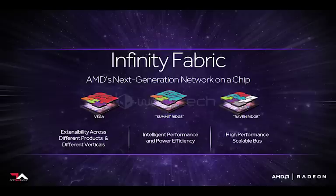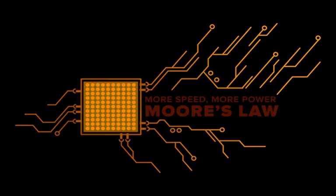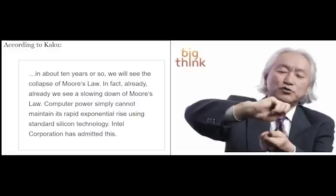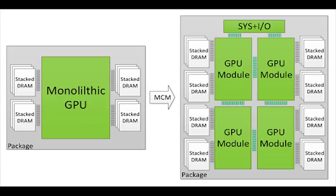Do you guys remember Moore's Law? It states that transistor count will double every 18 months. So far this prediction has held true, but we're getting to a point where shrinking the die size while also packing twice as many transistors is getting difficult, and at some point all chip makers will hit a wall. Physicist Michio Kaku has spoken about this: in about 10 years we will see the collapse of Moore's Law — in fact we're already seeing a slowdown. Computer power simply cannot maintain its rapid exponential rise using standard silicon technology, and Intel has admitted this.